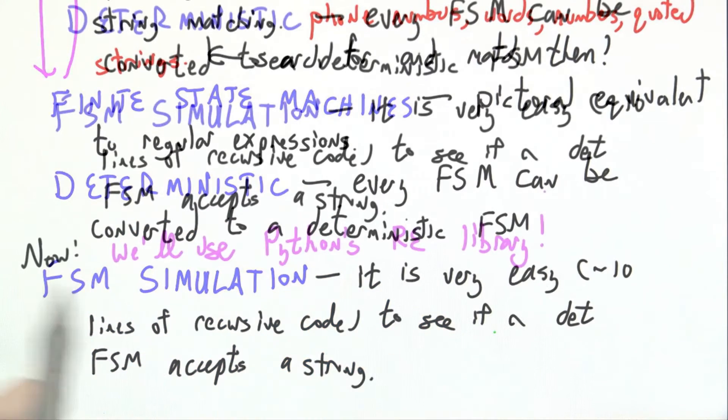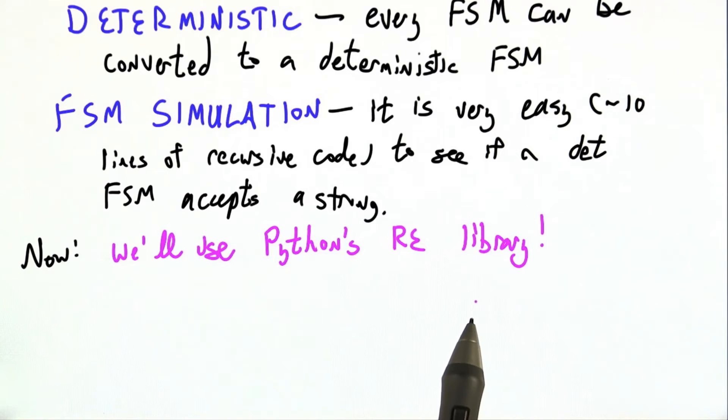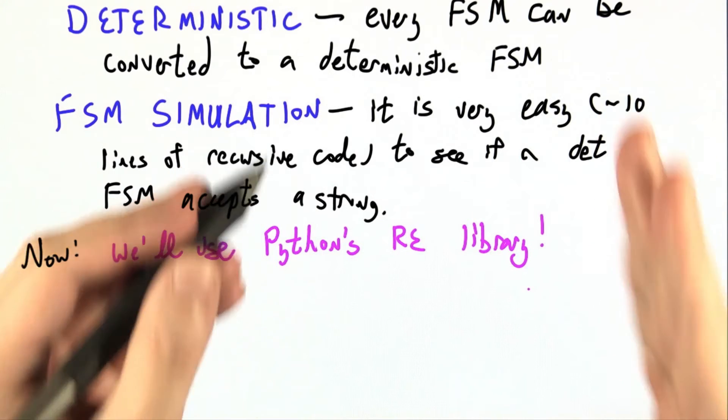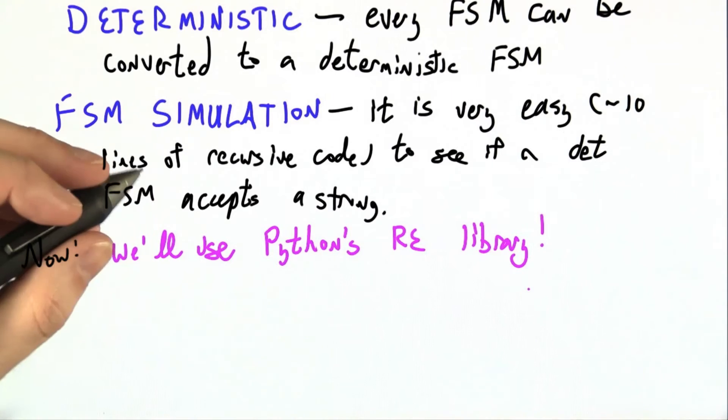In fact, you've written that code. Now that you know how to implement regular expressions, take the regular expression, make a finite state machine, make it deterministic, call fsmsim. We'll just use Python's regular expression library. But it's doing exactly those steps under the hood. It works the same way you would.